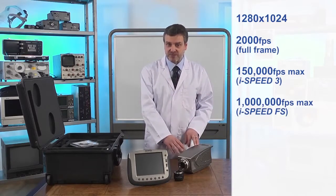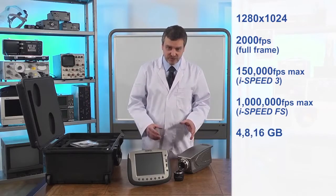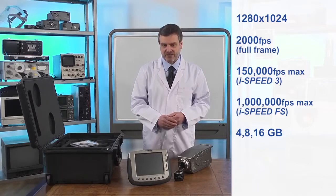The camera comes with three sizes of memory: 4, 8, and 16 gigabytes, which means you can record up to five seconds of high-speed video in your camera.